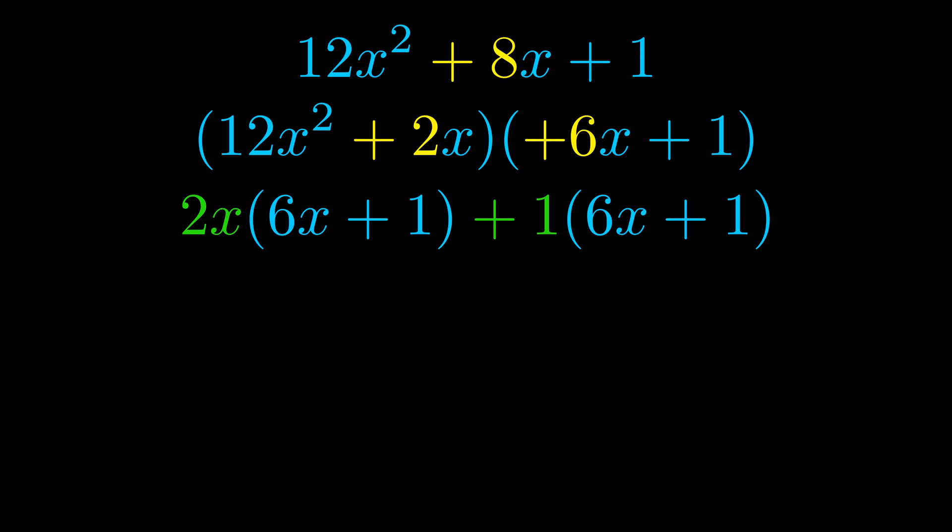Notice also how what remains inside of the parentheses is the same in both cases. The blue values are the same. Those blue values will become one of our factors and we will combine the two green values, the GCFs that we pulled out, to get the other one. And that is our fully factored equation.